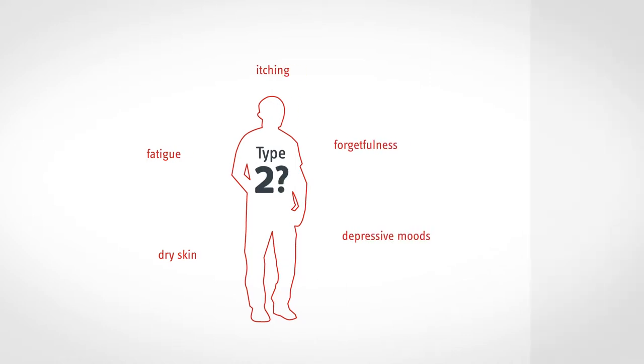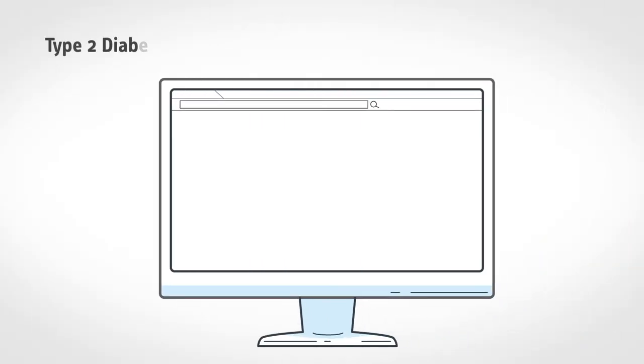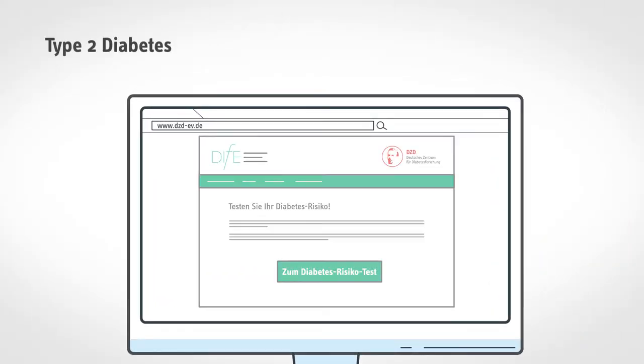Nevertheless, type 2 diabetes can be detected early, long before its onset, by means of appropriate tests. For assessing personal risk there is the German Diabetes Risk Score.